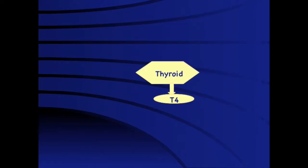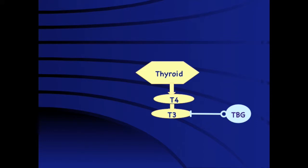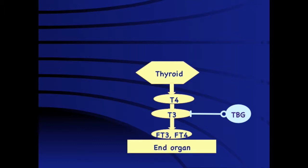The thyroid gland produces the T4 hormone, which acts as a pro-hormone and is in turn converted into T3 hormone. Both of these hormones bind to the thyroxine binding globulin (TBG), and it is the free fraction — free T3 and free T4 — which are the predominant action points as far as thyroid function is concerned.